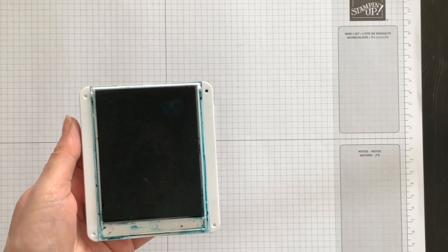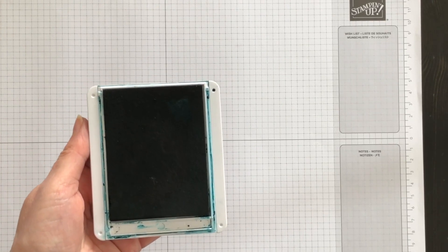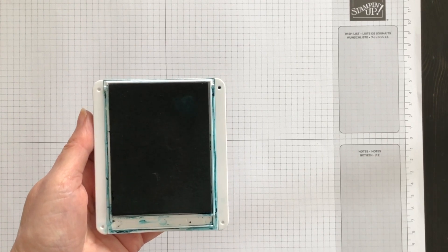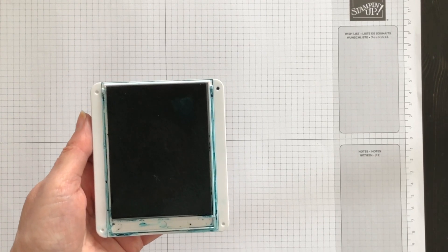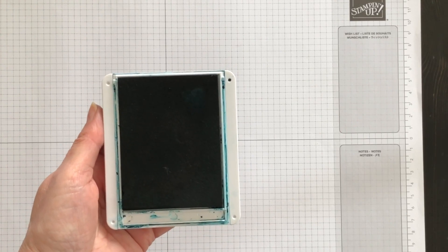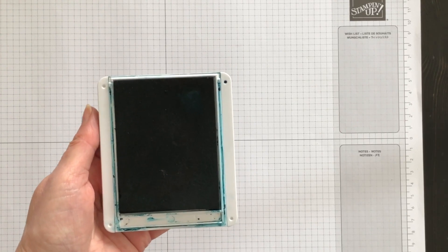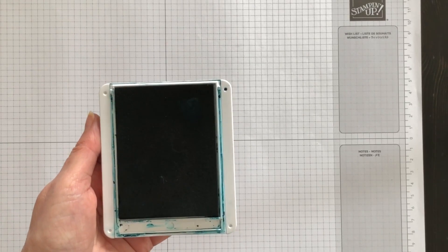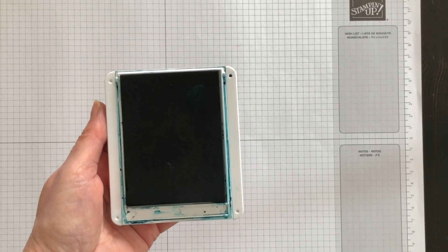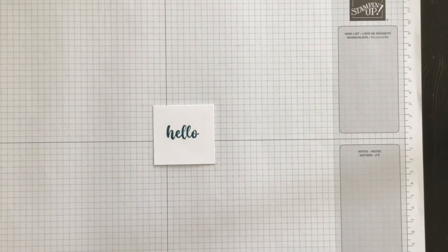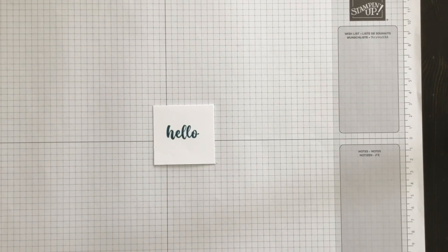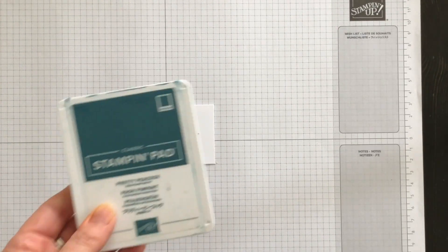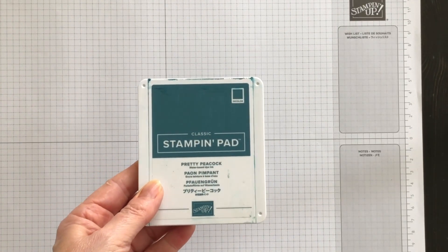Pretty Peacock is coming back into the next annual catalog. Stampin' Up is doing a color refresh, bringing back a couple of the old colors and introducing some new ones, which means that some of the current colors will be going away. So grab your ink refills and cardstock of your favorite colors, just in case. Because once the announcement that they're going to retire happens, these products will fly off the shelf.